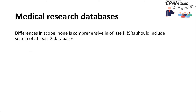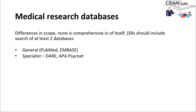With regards to medical research databases, there are a lot of differences between individual databases, and no single database is a comprehensive list of all literature on a particular topic. If you're doing a systematic review — as opposed to just trying to answer a clinical question — you really need to search two or three databases. Reviewers will often ask you to check additional databases. You've got general medical databases like PubMed and Embase, specialist databases, the Cochrane Library of systematic reviews, and databases that focus on specific medical specialties.